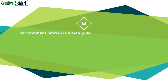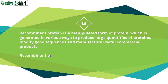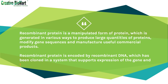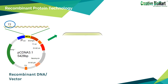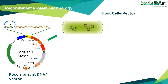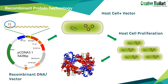Recombinant protein is a modified form of protein, which is generated in various ways to produce large quantities of proteins, modify gene sequences, and manufacture useful commercial products. Recombinant protein is encoded by recombinant DNA, which has been cloned in a system that supports expression of the gene and translation of mRNA. Modification of the gene by recombinant DNA technology can lead to expression of a mutant protein or a large quantity of protein.